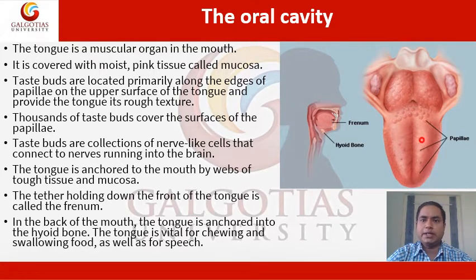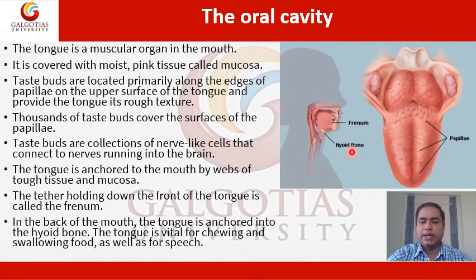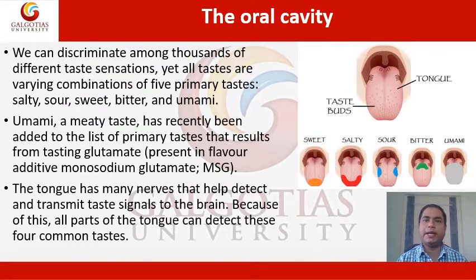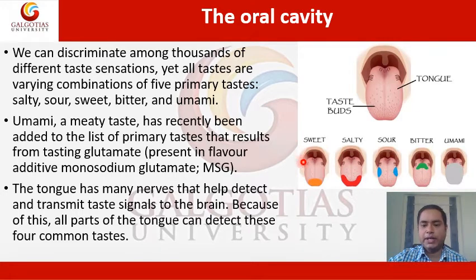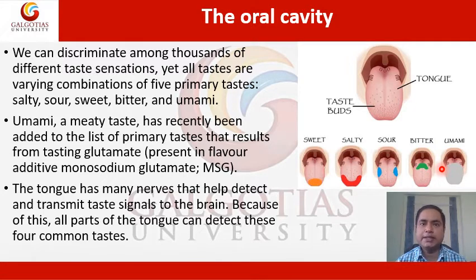There are thousands of taste buds covering the surface of the papillae. Taste buds are collections of nerve-like cells that connect to the nerves running into the brain. In the back of the mouth, the tongue is anchored to the hyoid bone. The tongue is vital for chewing and swallowing food, as well as for speech. We can discriminate among thousands of different taste sensations. All tastes are varying combinations of five primary tastes: salty, sour, sweet, bitter, and umami. Umami is a meaty-like taste and has recently been added to the list of primary tastes, resulting from tasting glutamate.